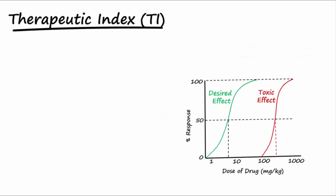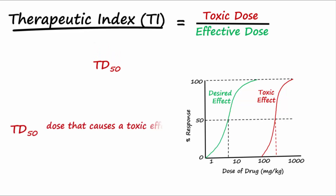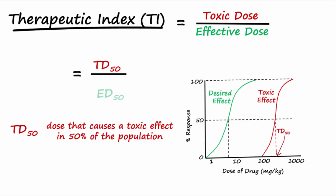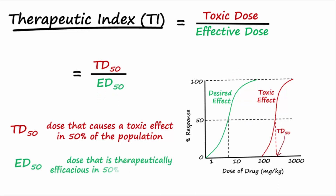Therapeutic index is the relationship between safety and effectiveness, and is determined by dividing the toxic dose by the effective dose. The toxic dose, or TD50, is the amount that is toxic in 50% of a population, and is divided by ED50, which is the therapeutic dose, or the dose that is effective for the desired response in 50% of a population.